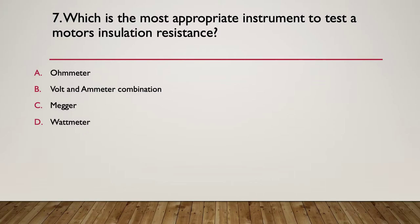Question seven. Which is the most appropriate instrument to test a motor's insulation resistance? A. An ohmmeter. B. A volt and ammeter combination. C. A megger. Or D. A watt meter.